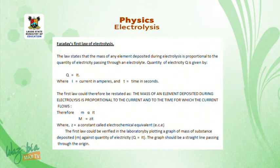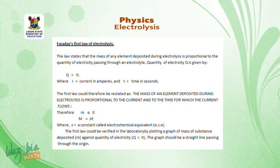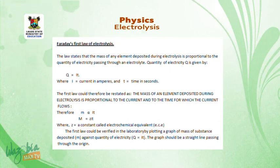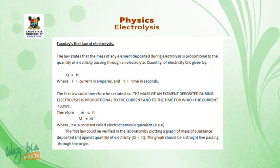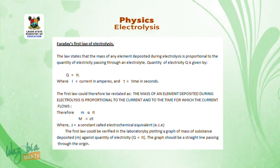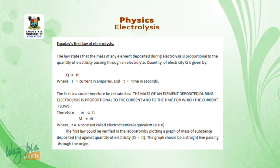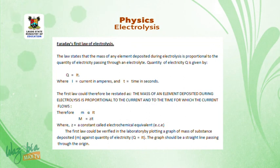Faraday's first law of electrolysis: the law states that the mass of any element deposited during electrolysis is proportional to the quantity of electricity passing through an electrolyte. Quantity of electricity Q is given by Q = It, where I is current in amperes and t is time in seconds. The first law could therefore be restated as: the mass of an element deposited is proportional to the current and to the time for which the current flows. Therefore, m is directly proportional to It, where m = zIt, and z is a constant called the electrochemical equivalent (ECE).